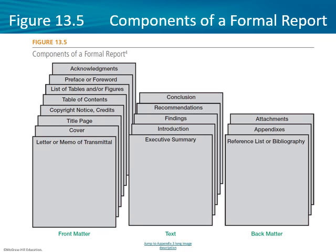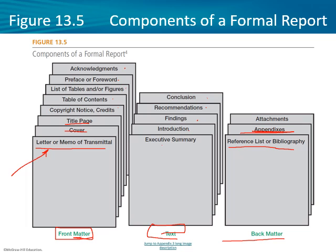Components of a formal report include: the front matter — letter or memo of transmittal, cover page, title page, copyright, table of contents, list of tables and figures, preface or forward, and acknowledgements. The text includes executive summary, intro, findings, recommendations, and conclusions. The back matter includes reference list, bibliography, and appendices — perhaps copies of the survey you administered. The memo of transmittal goes back to the days of the fax machine, when people needed to decide whether to print a large document.